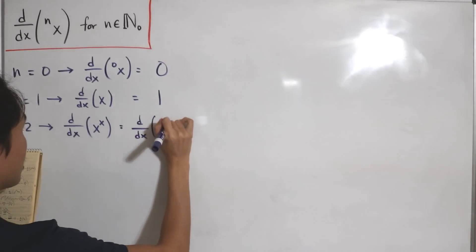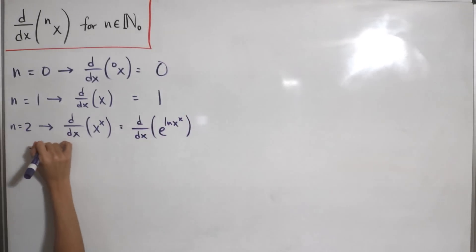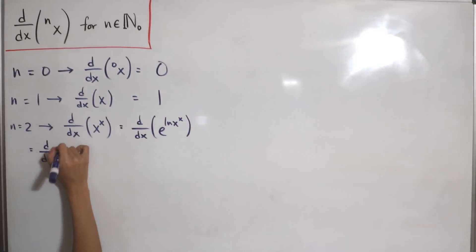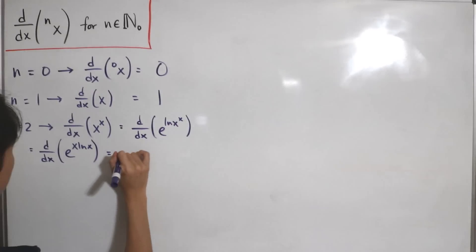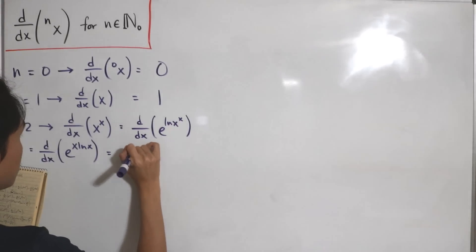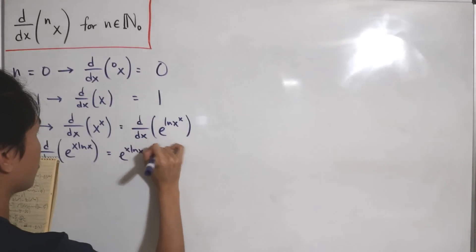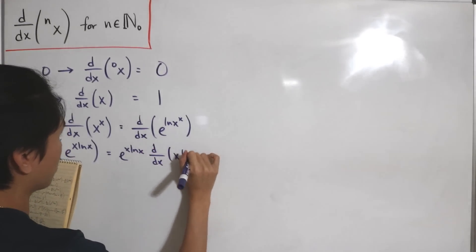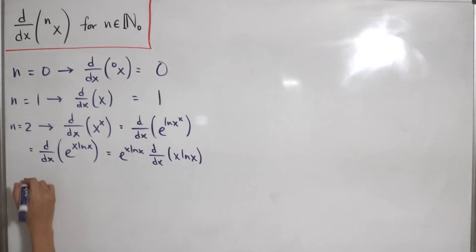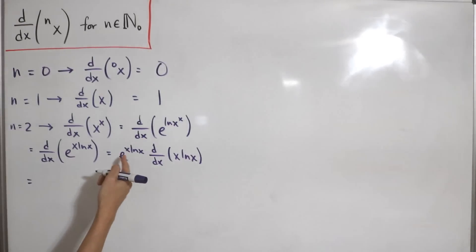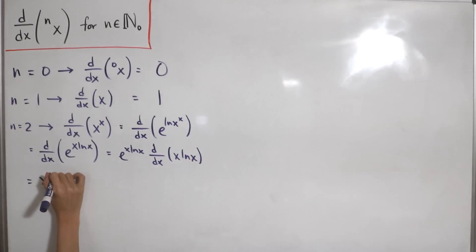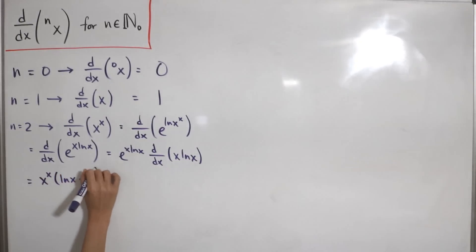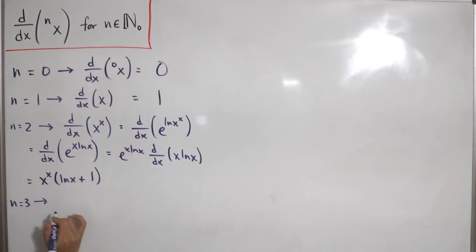We write x^x as e to the power of x·ln(x), then differentiate using the chain rule: the derivative is e^(x·ln x) multiplied by the derivative of x·ln(x). Since e^(x·ln x) = x^x, and applying the product rule to x·ln(x) gives ln(x) + 1, the derivative of the 2nd tetration is x^x · (ln(x) + 1).